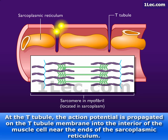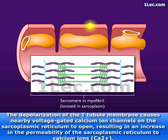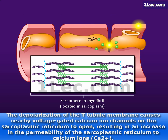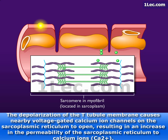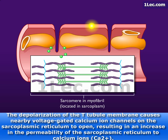The depolarization of the T-tubule membrane causes nearby voltage-gated calcium ion channels on the sarcoplasmic reticulum to open, resulting in an increase in the permeability of the sarcoplasmic reticulum to calcium ions.